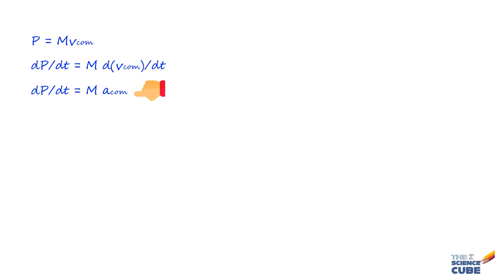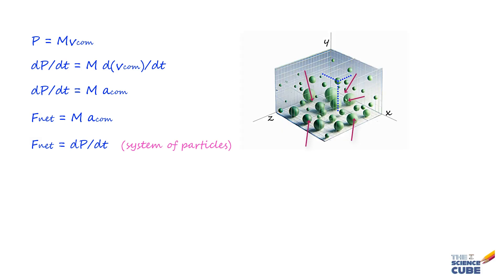Once again, if we compare this equation with this, it allows us to write Newton's second law for a system of particles as F_net = dP/dT, where F_net is the net external force acting on the system. You can see that this equation is the general form of the equation for a single particle, now written for a system of many particles.